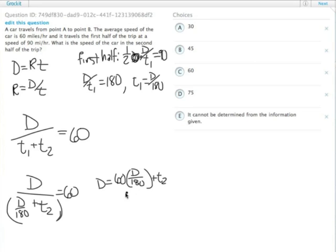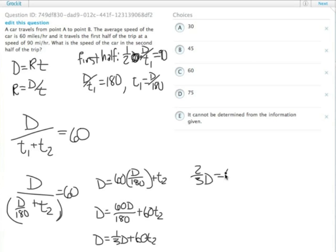We can distribute the 60. D equals 60D over 180 plus 60 times T2. We can simplify this fraction. D equals one third D plus 60 times T2. We can subtract one third D from both sides. So now we have two thirds D equals 60 times T2.